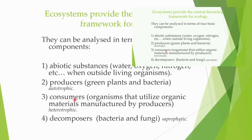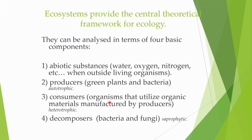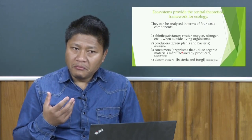Thirdly, there are the consumers — living species which utilize organic materials manufactured by the producers — that is the heterotrophic. Finally, there are the decomposers, that is bacteria and fungi, known as saprophytic. There is constant interrelation between the producers, consumers, and decomposers. If any of these is missing or there is inadequacy or inefficiency on their part, this whole basic component of our ecosystem will become imbalanced.